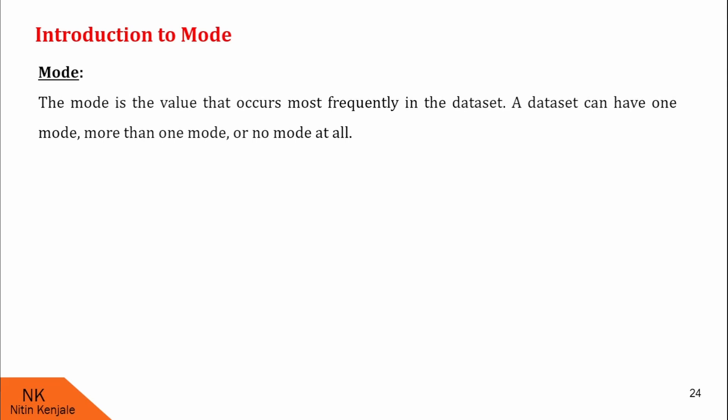Let us understand this with the help of an example. Here in example number one, we will see the data with one mode. Look at this data. Here there are five values 1, 2, 2, 3 and 4. Out of these five values, this number 2 occurs twice. Therefore mode of this data is 2.